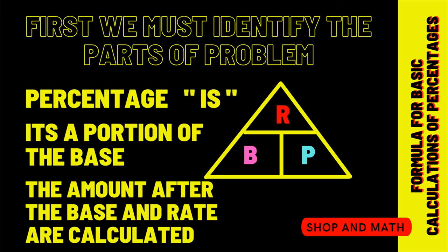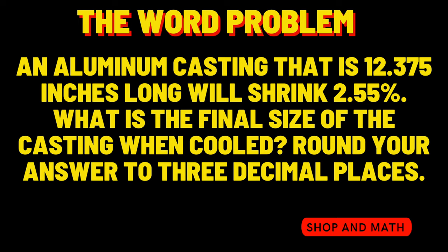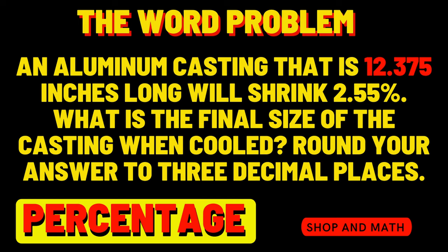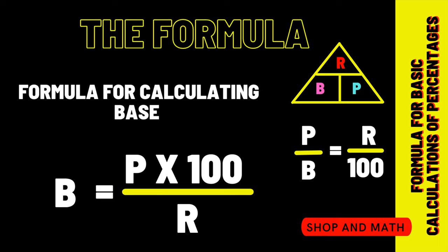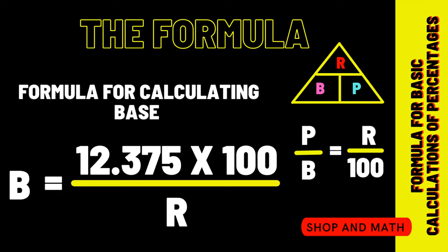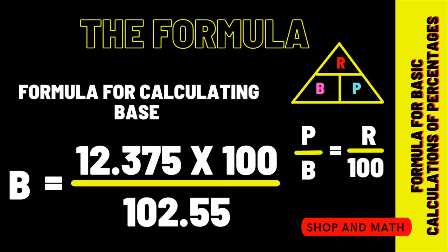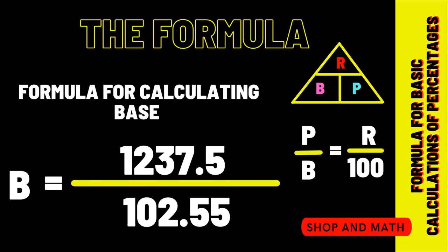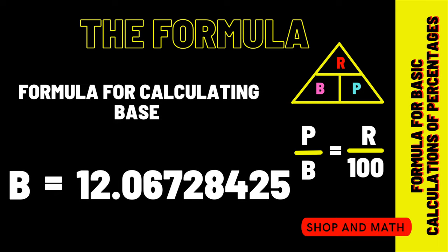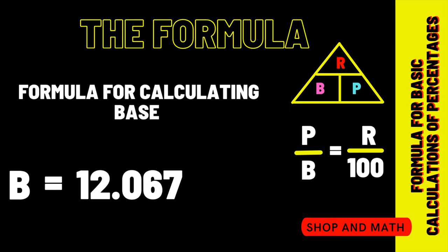Percentage is associated with 'is' — it is a portion of the base, the amount after the base and the rate are calculated. The percentage is going to be 12.375. Since we have the percentage and the rate, we use the formula: 12.375 times 100 is 1237.5, divided by 102.55 equals 12.06728425. We round to the third decimal place, therefore the base equals 12.067.